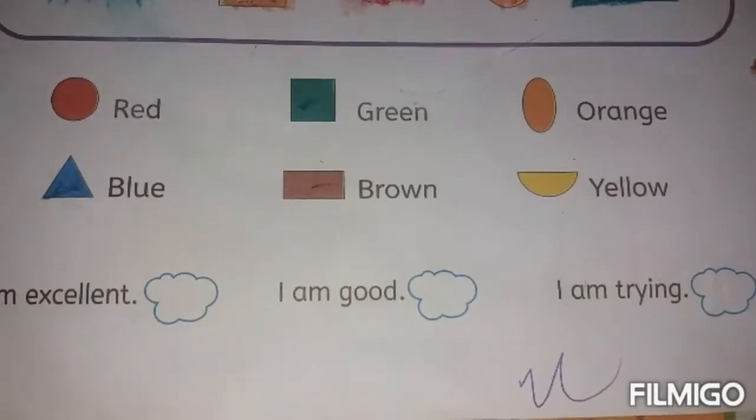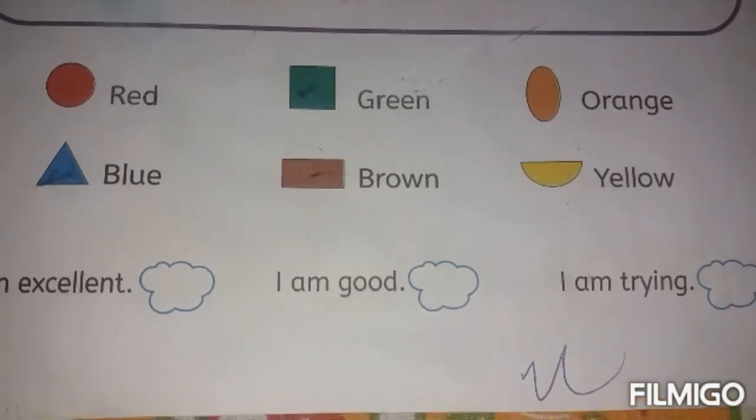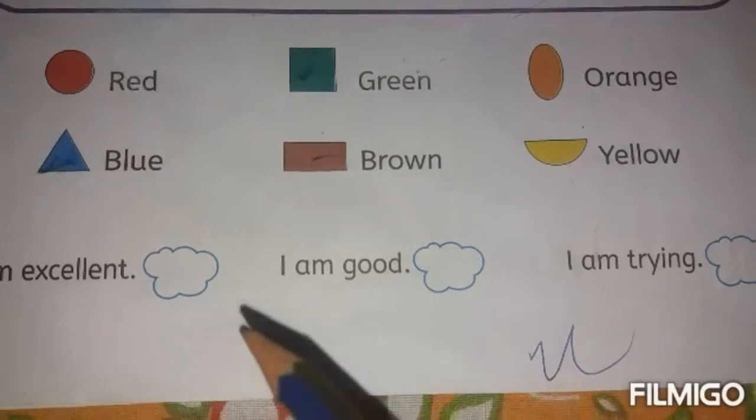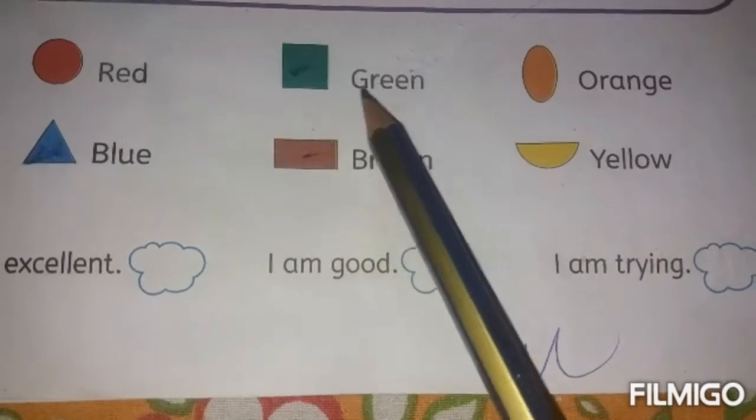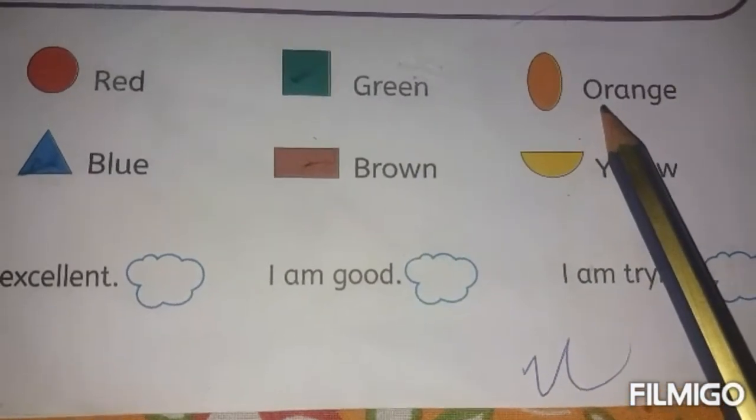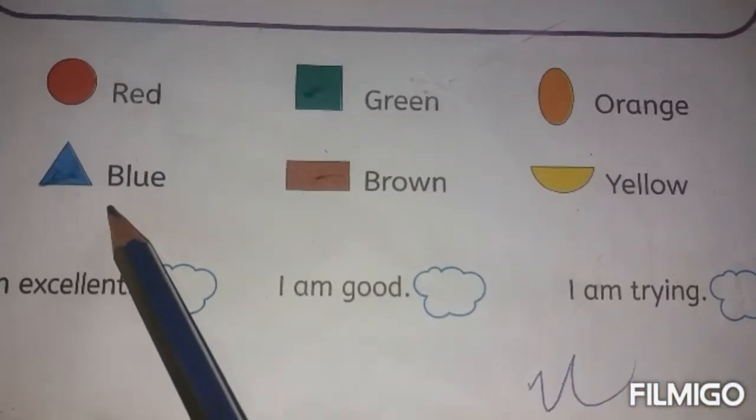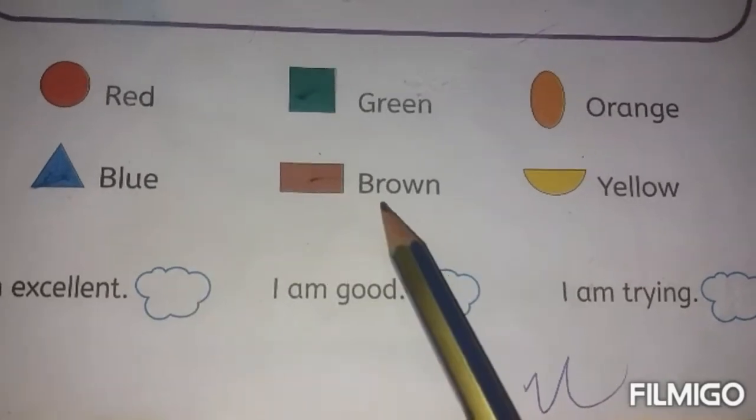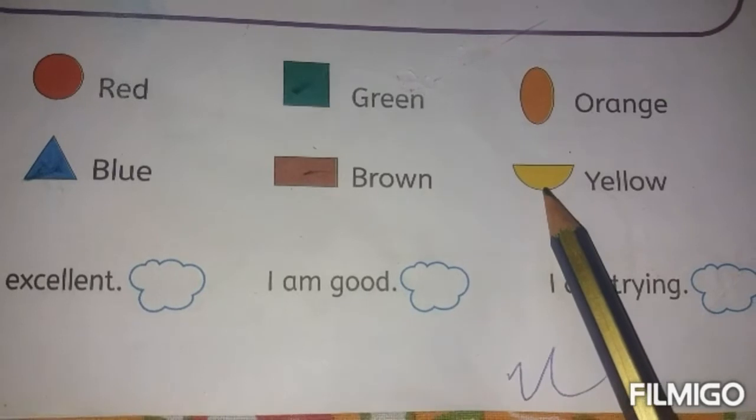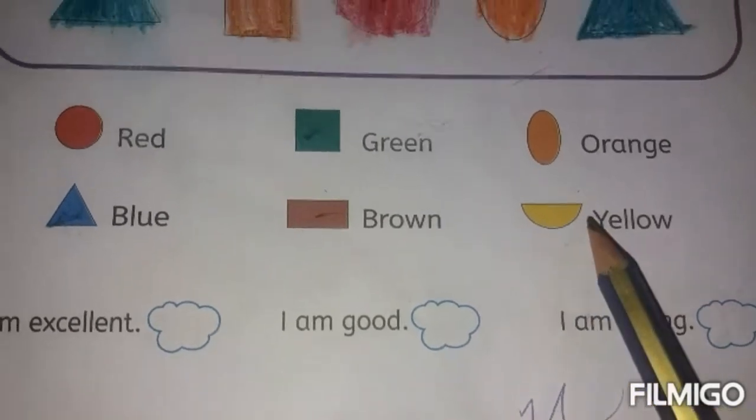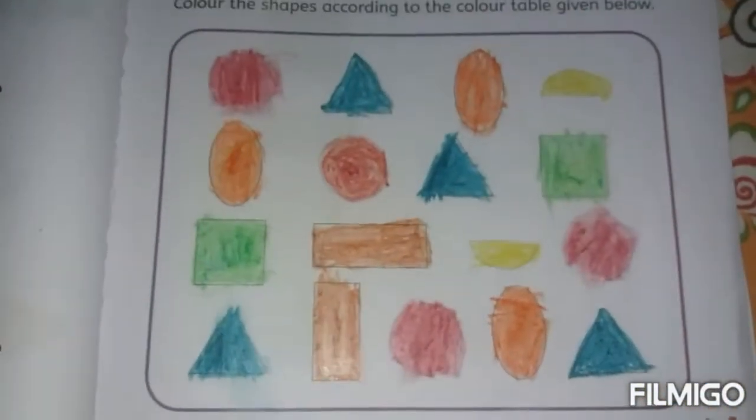In page number 55, you have to color the shapes. Color the circle shapes in red. Color the square in green. Color the oval in orange. Color the triangle in blue. Color the rectangle in brown. Color the semicircle in yellow. Do this same way, okay?